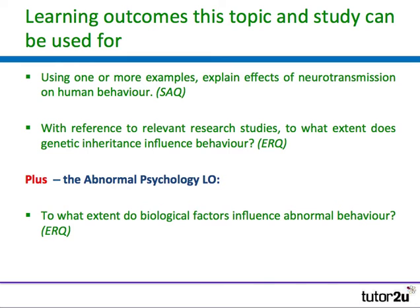Caspi's study and the topic of inherited predisposition to a depressive response can be used for three learning outcomes: two from the biological approach in the core, plus the abnormal psychology learning outcome on to what extent do biological factors influence abnormal behaviour. When you have a choice of human behaviour for the short answer or extended response question, choosing depression or major depressive disorder is a very good way to go because it allows you to use this study extensively.